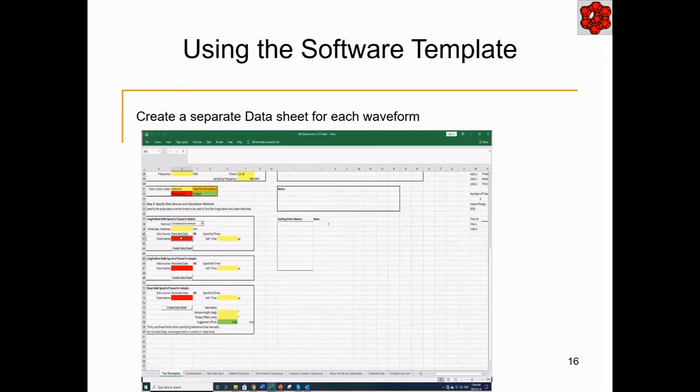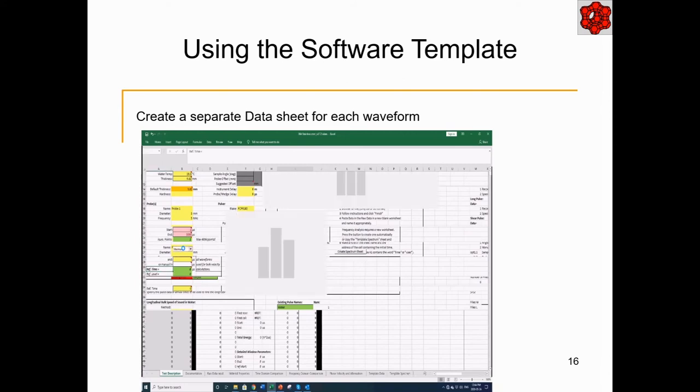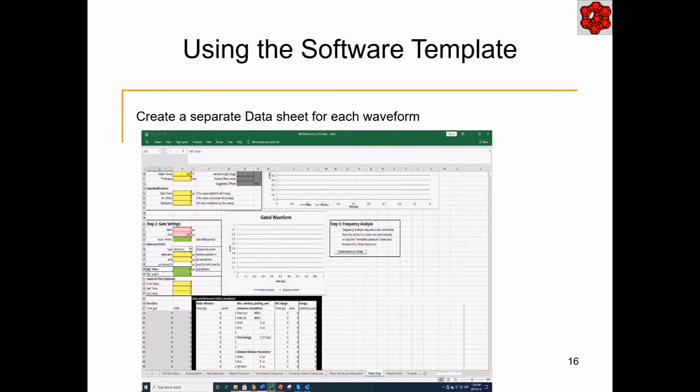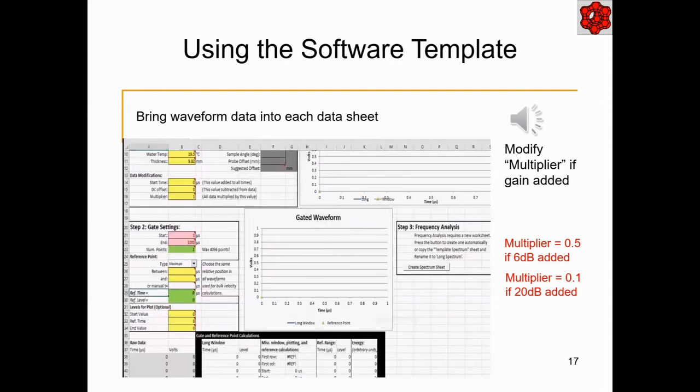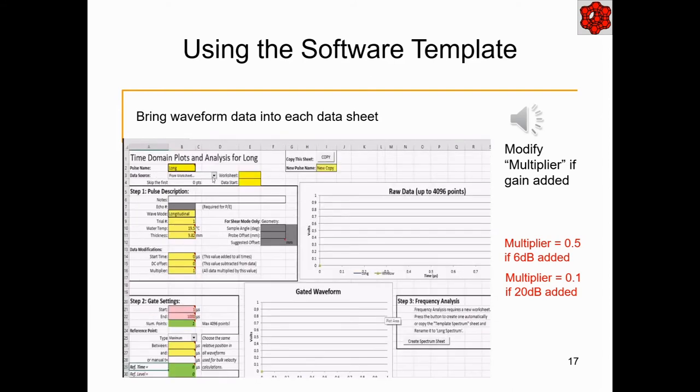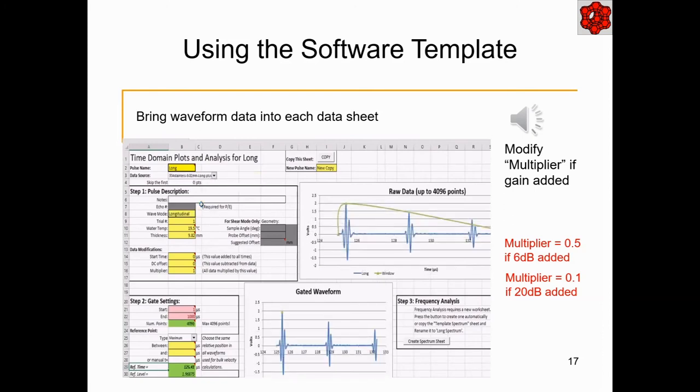On the same Test Description worksheet, we now import the TXT files. There is a separate process for CSV file format. Next, we make analysis pages for each waveform. Once you have entered a name for the data in the red cells, there is a prompt that a datasheet needs to be made. Clicking on Create Data Sheet automatically generates the worksheet and gives it the name that you entered in the red cell, for example, Water Data. Once you have created the data sheets for each of the modes, go to the datasheet one at a time and import A-scan data files. Make sure you import the correct file name and do not mix up the water, long, or shear files. Having selected the TXT file name that you want to see, the waveform is displayed.